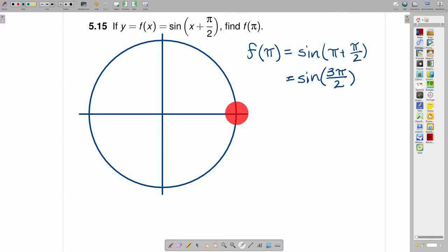If we start here at 0, we know if we go all the way around, that's 2 pi. If we go halfway around, that's pi. And so that means if we go one-fourth of the way around, that's pi over 2. So if we start here again,